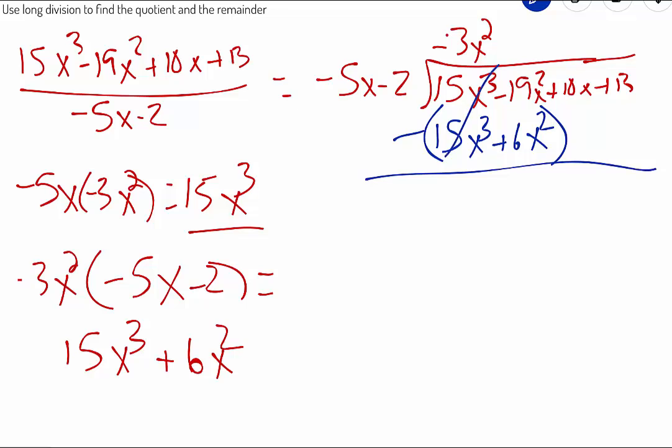15x cubed minus 15x cubed cancels. Negative 19 minus 6x squared gives us a negative 25x squared and drop down the rest of your function.